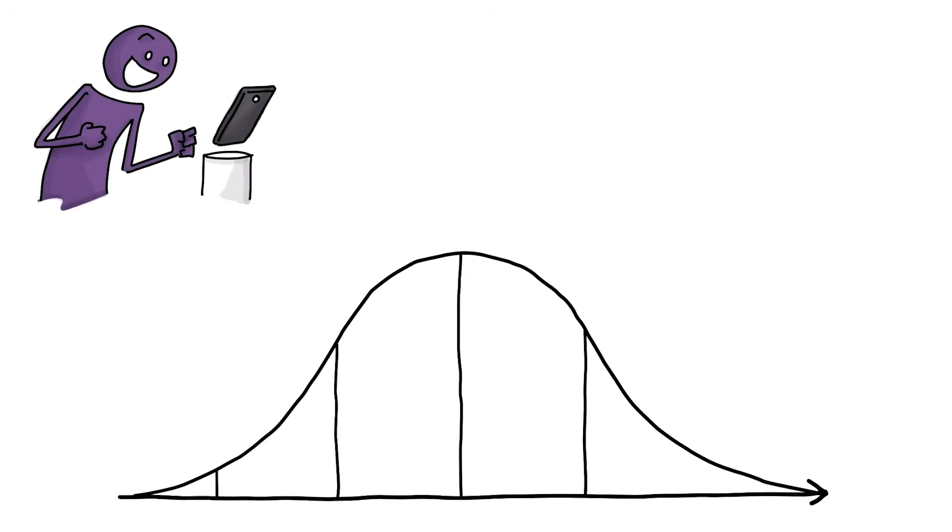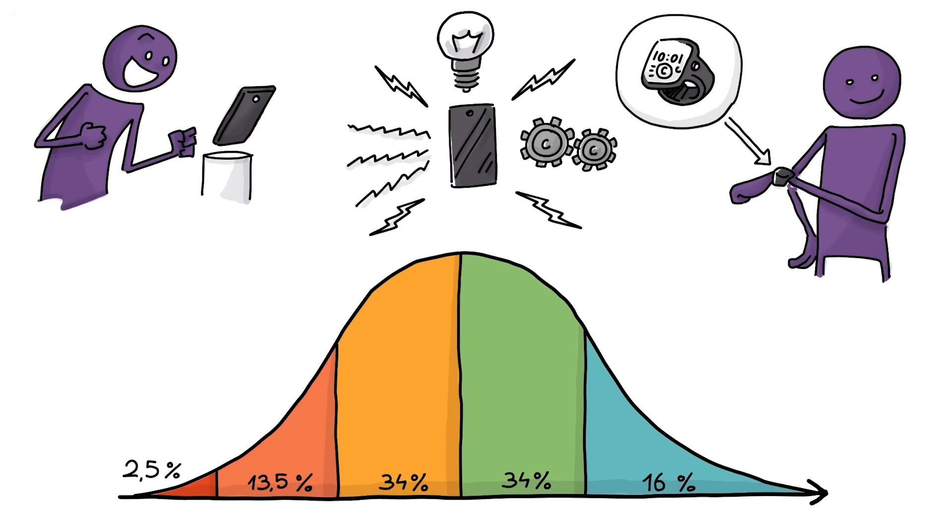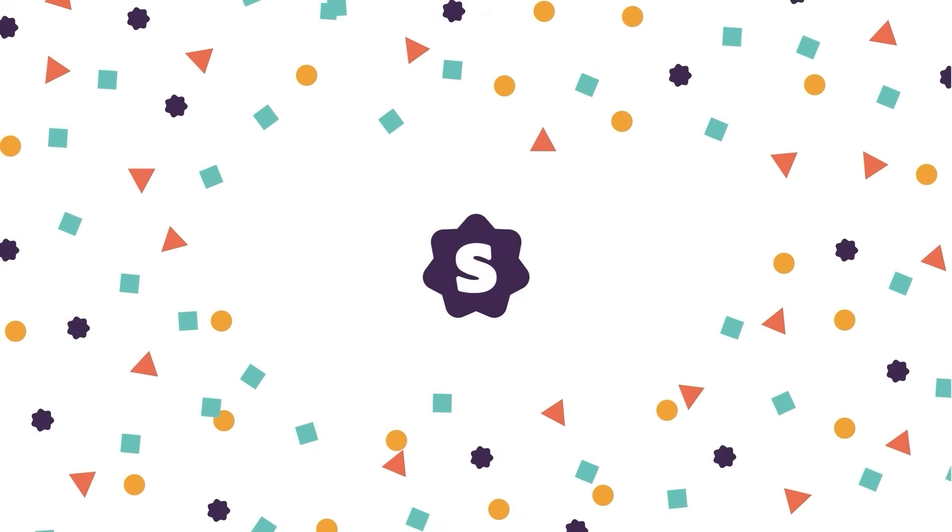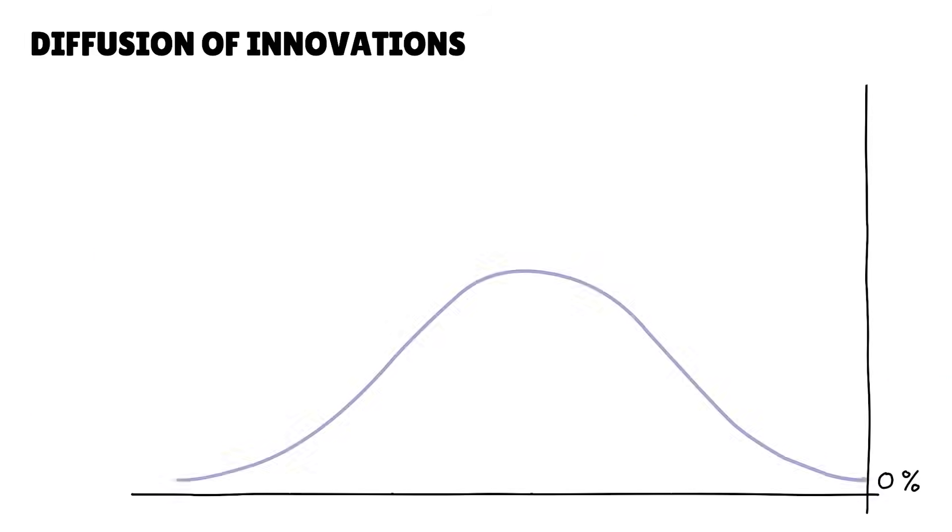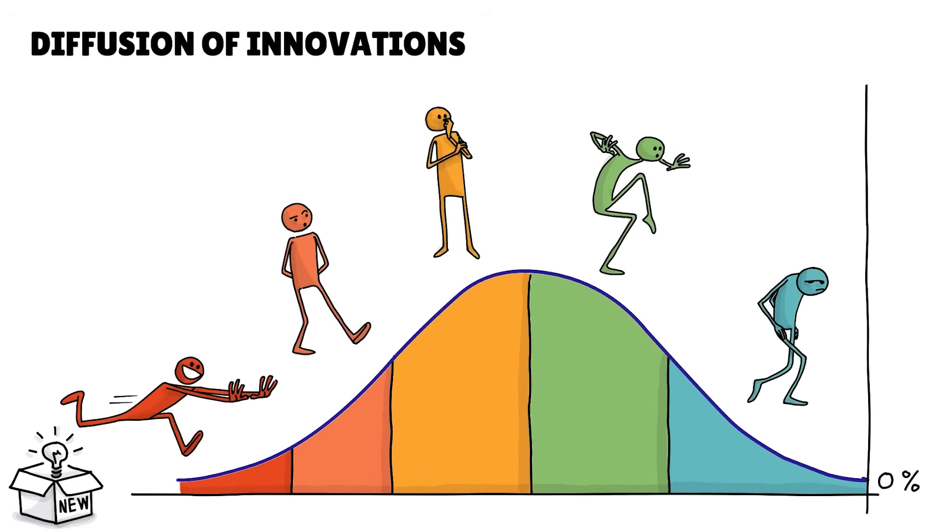This is the pattern new trends and inventions tend to follow on their path to dominance. Understanding it allows you to join the innovators instead of the laggards. The diffusion of innovations theory explains how new products and ideas spread across five groups of people, eventually reaching all of us.